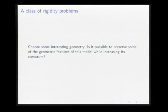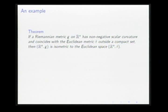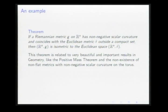Let me give you an example. Consider the Euclidean space. Is it possible to increase its curvature while preserving the geometry at infinity? Well, the answer is no, and this is actually a theorem. If a Riemannian metric on R^n has non-negative scalar curvature and coincides with the Euclidean metric outside a compact set, it must be isometric to the Euclidean metric itself.